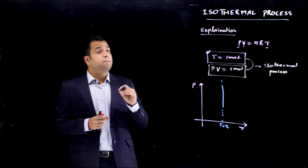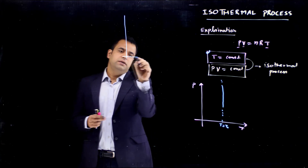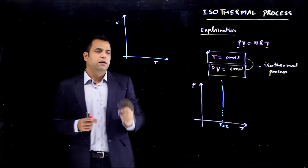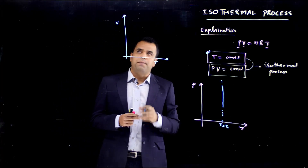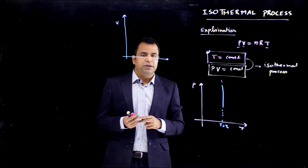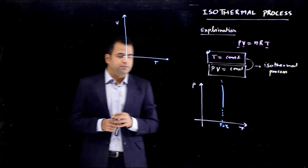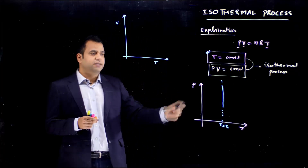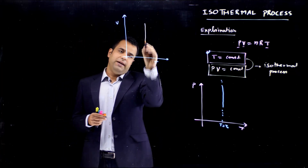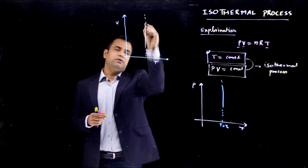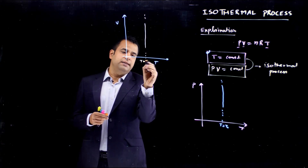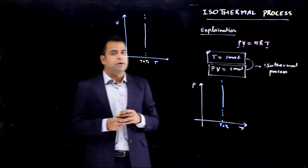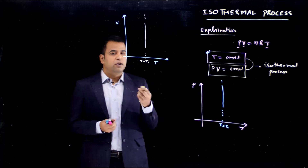Let us go for the V-T graph. I am representing the volume axis onto the y-axis and temperature onto the x-axis. In this case also, it will be a state line which will tend to cut the temperature axis at temperature T₀. This is the isothermal graph in the case of the V-T curve.